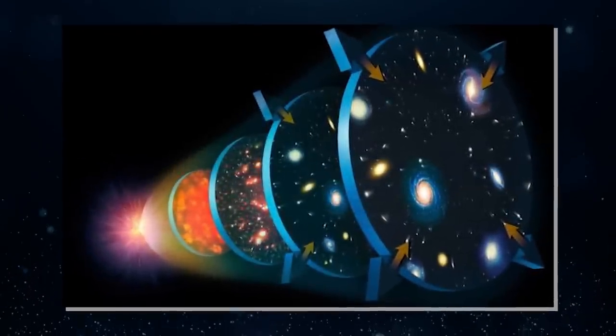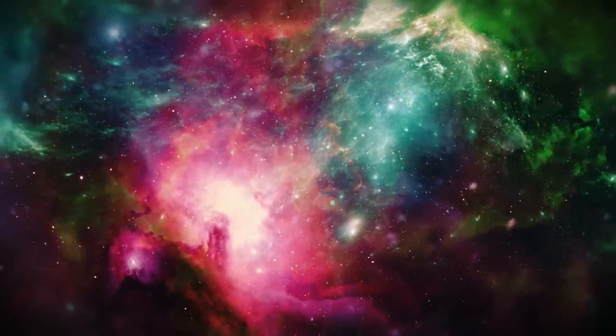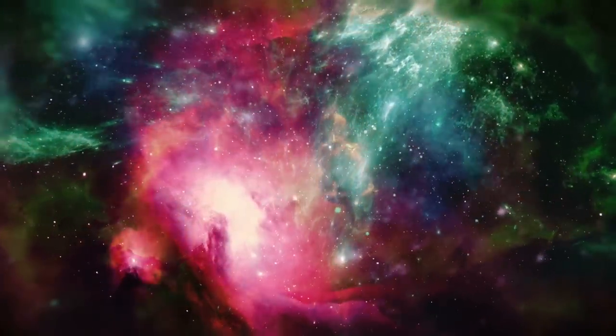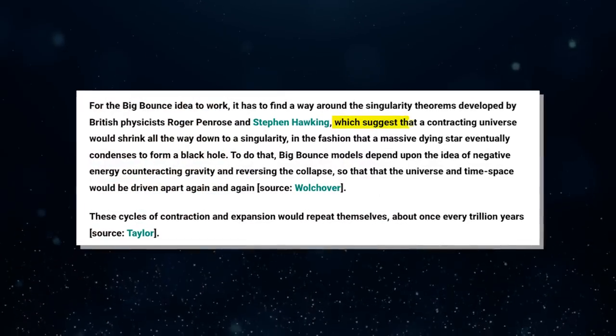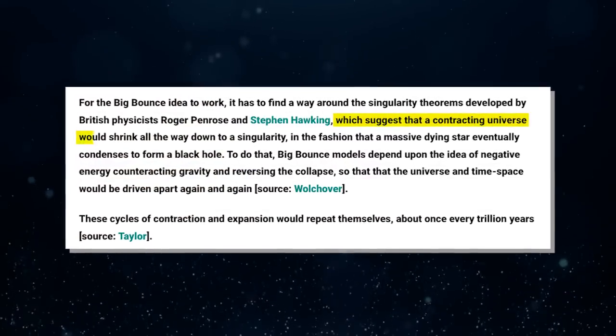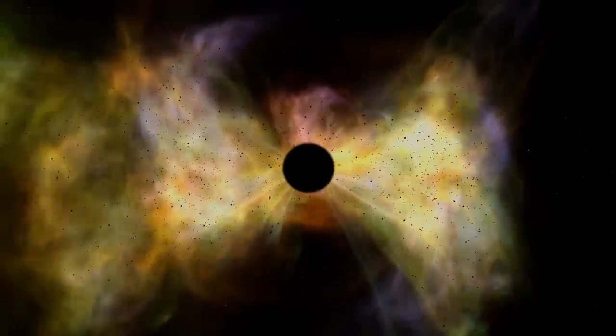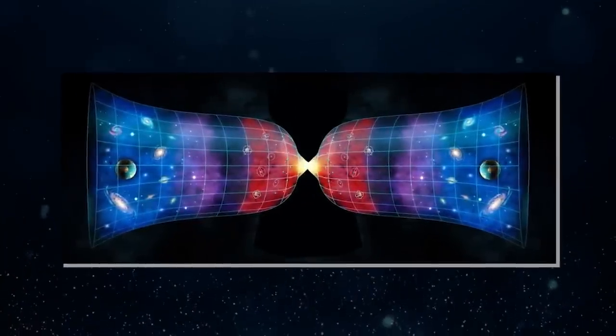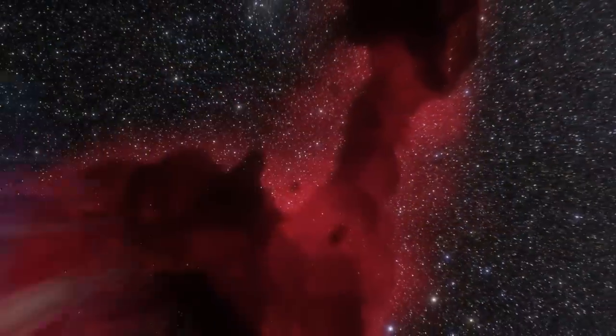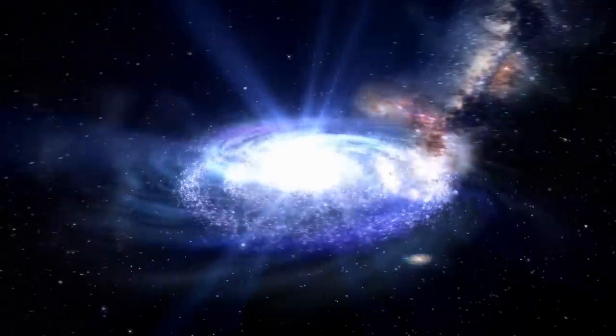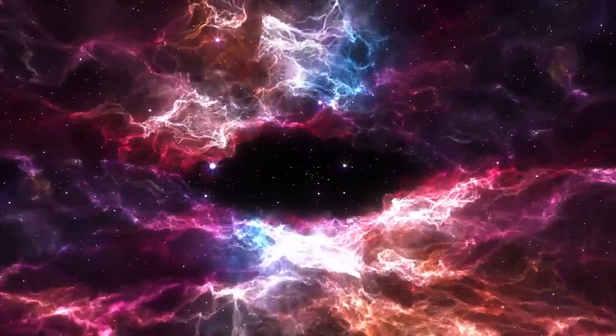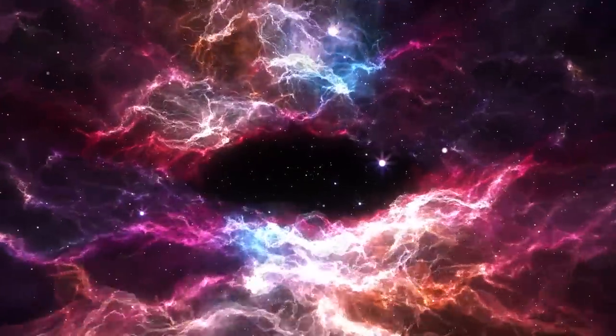For the big bounce idea to work, it has to find a way around the singularity theorems developed by British physicists Roger Penrose and Stephen Hawking, which suggest that a contracting universe would shrink all the way down to a singularity in the fashion that a massive dying star eventually condenses to form a black hole. To do that, big bounce models depend upon the idea of negative energy counteracting gravity and reversing the collapse so that the universe and time space would be driven apart again and again.